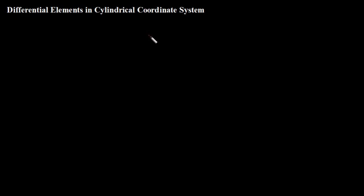Hi, welcome. In my previous video, we discussed how to visualize a cylindrical coordinate system. In this video, we are going to check how to represent differential elements in cylindrical coordinate system. We have already seen how to represent differential elements in Cartesian coordinate system. I will provide the link in the description. Please watch that video before watching this for better understanding.